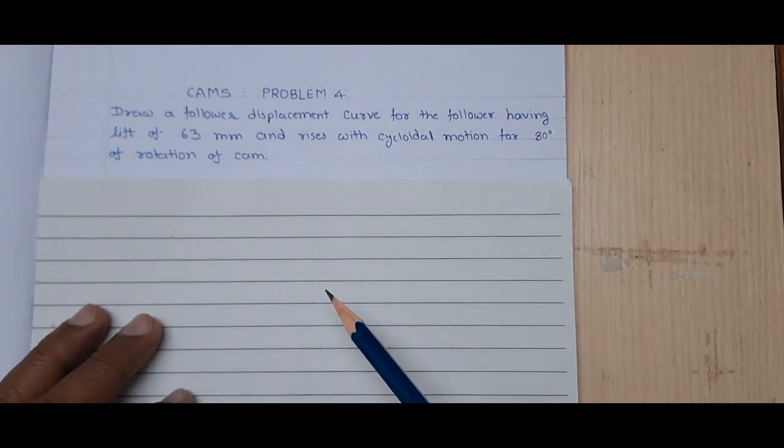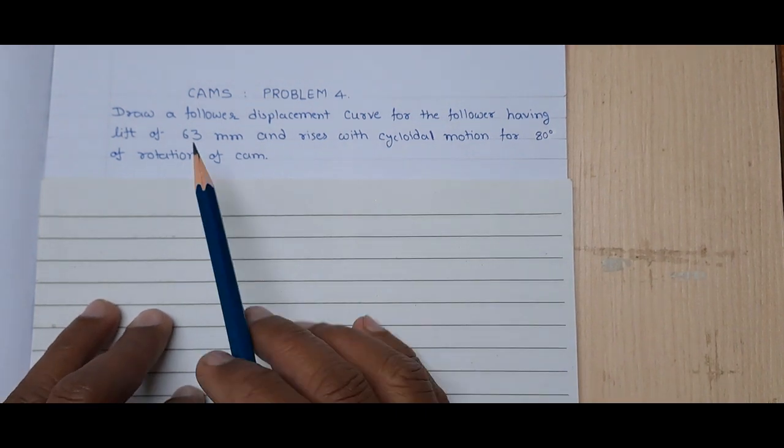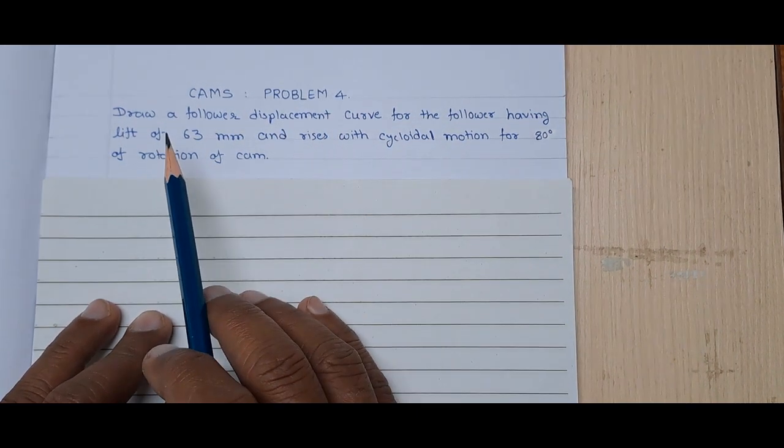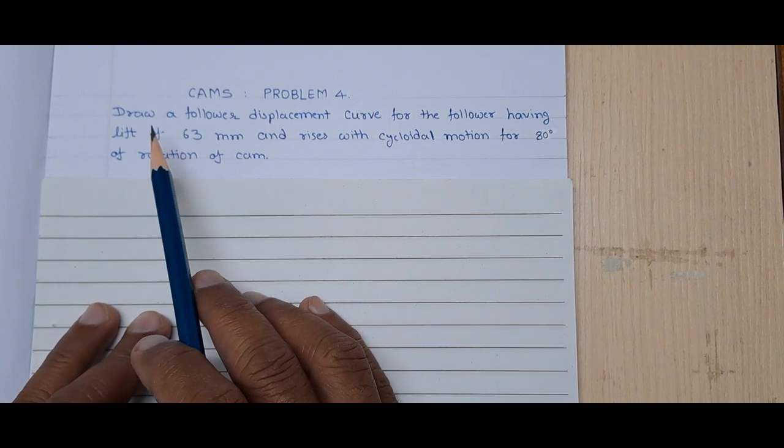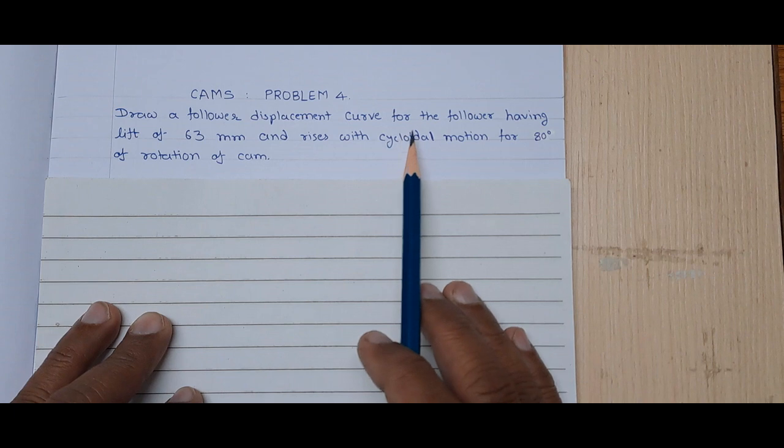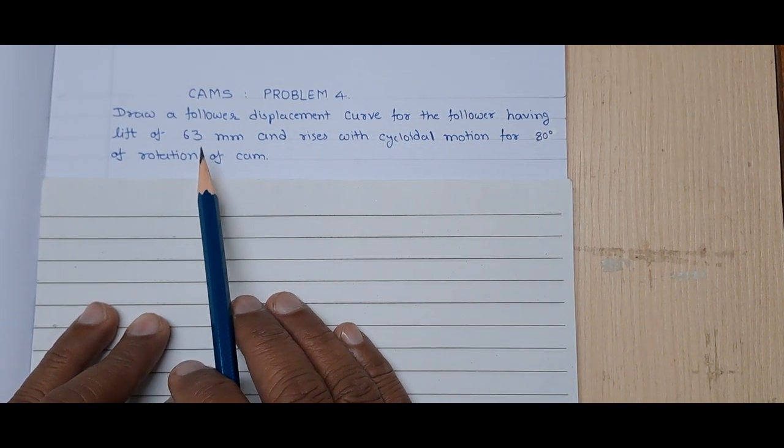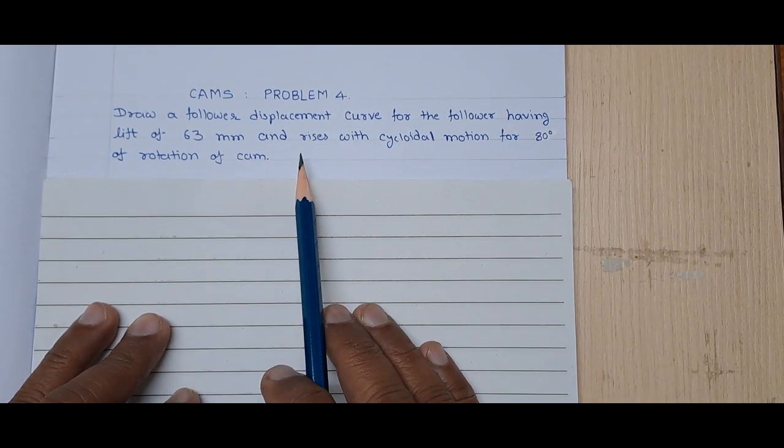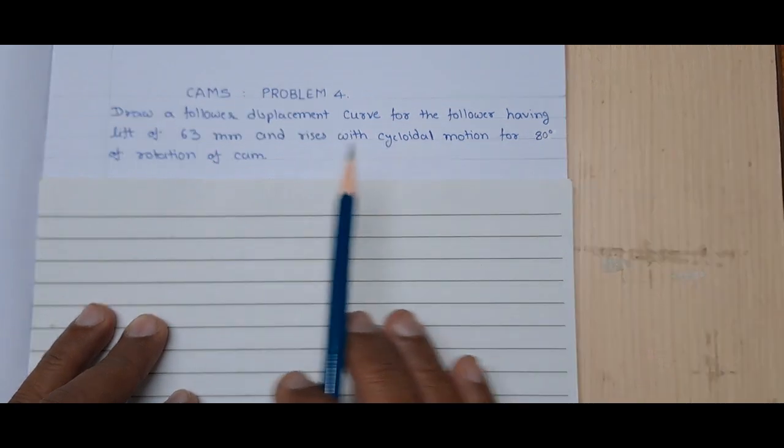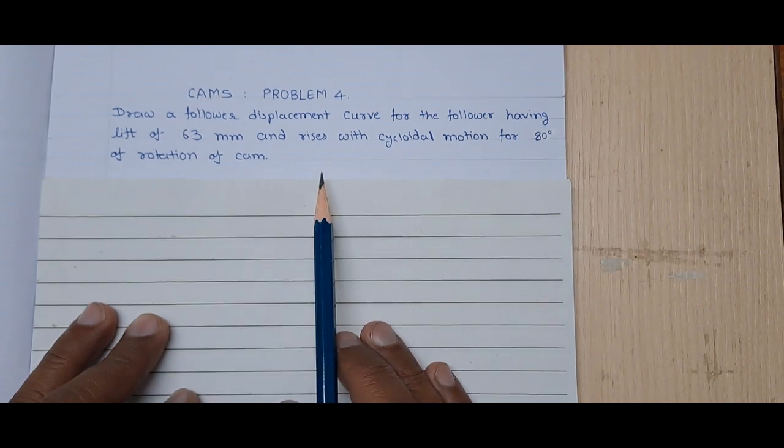Dear friends, welcome to the next problem of CAMS, problem number 4. The data of the problem is like this: Draw a follower displacement curve for the follower having lift of 63 mm and rises with cycloidal motion for 80 degrees of rotation of CAM.